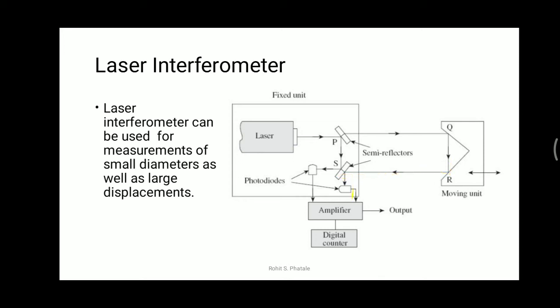Some part of the laser beam coming from R passes back towards the first photo diode, and some light also travels to the second photo diode. This is the combination of first and second photo diodes. The two paths P-Q-R-S and P-S have their outputs fed to the amplifier.